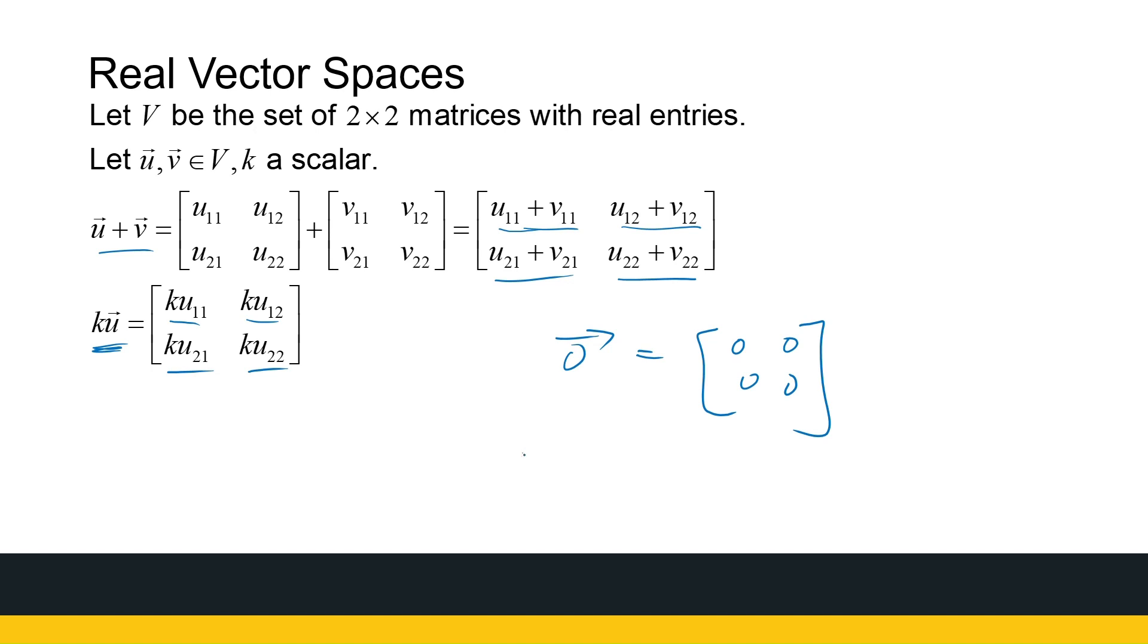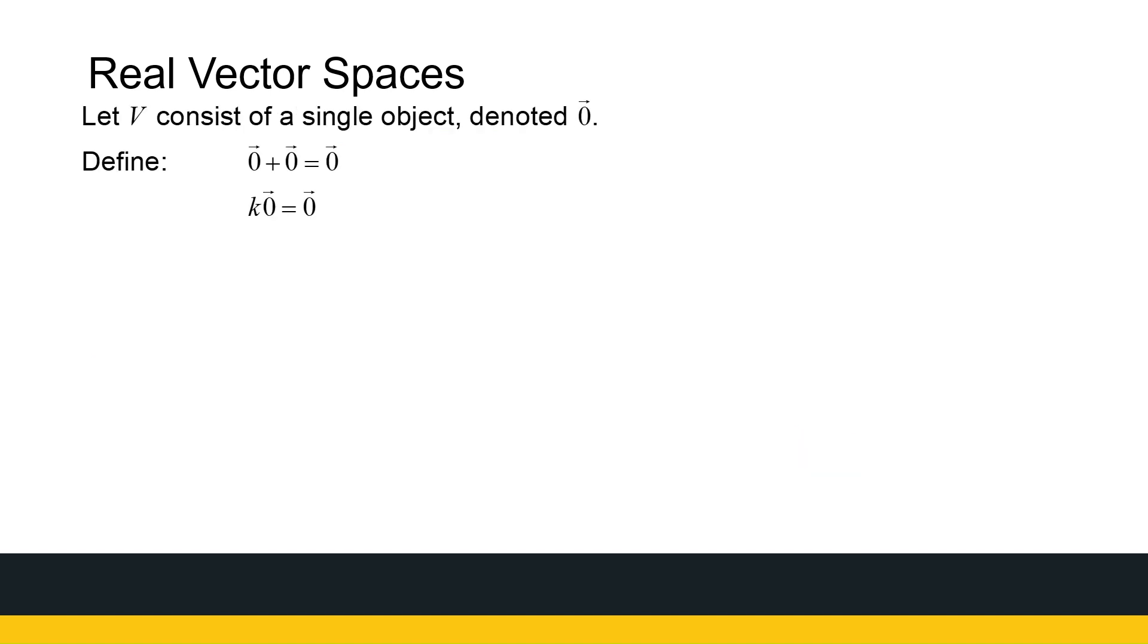And the negative will just be minus U11, minus U12, and so on. So this is definitely also going to be a vector space. Now, yet again, you need to go through all the axioms to check and to confirm. But you can do that in your own time. The 2 by 2 matrices with addition and scalar multiplication defined as it is here is definitely a vector space. And it will meet all those requirements.